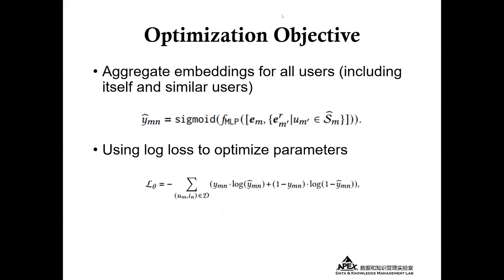As shown below, we get a representation for each user's sequence, and we have many similar users in addition to the target user. Therefore, we aggregate these representations and pass them through an MLP to model the final prediction. Log loss is used to optimize the parameters.